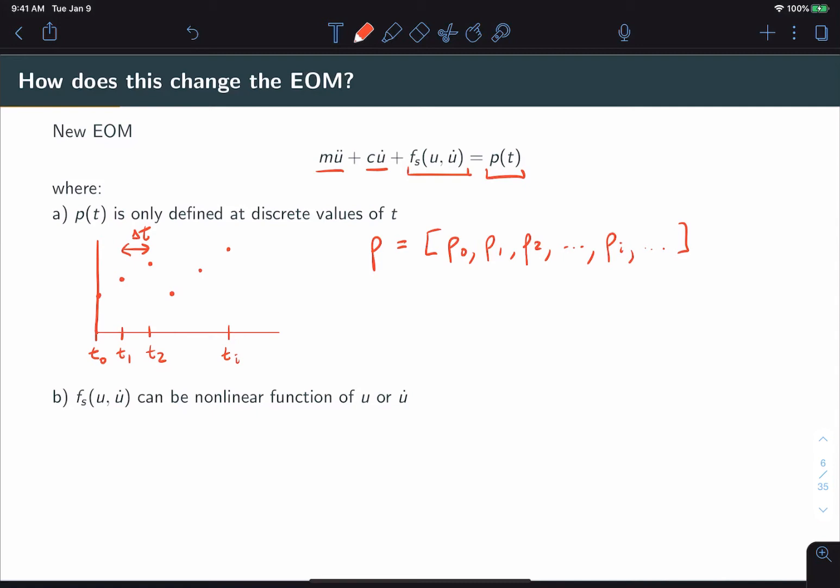Now, f_s is, like I mentioned, an arbitrary function. This is going to give us the capability to model nonlinear systems. For a linear system, f_s would be our typical ku, but that's not that interesting in this case. For a nonlinear system, this could be really anything. We could model, for example, a cubic spring, in which case this would be a function ku to the third.